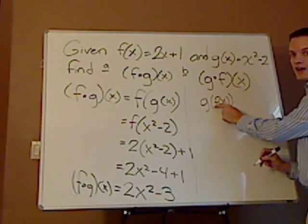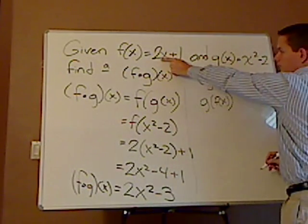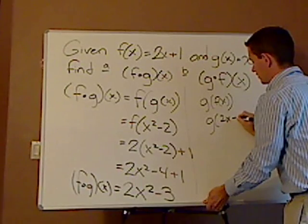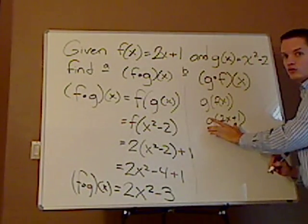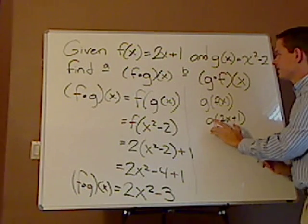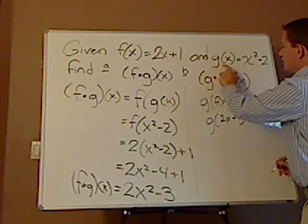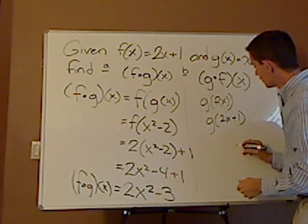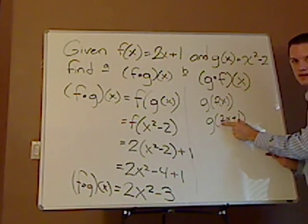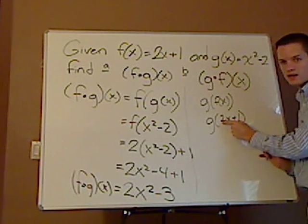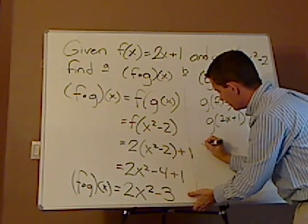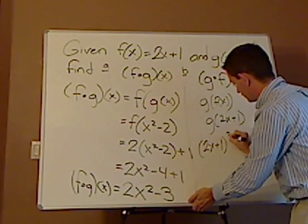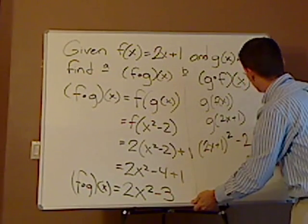So replace the f of x with your function, which is g of 2x plus 1. Now g, remember this is not a variable, this is a function. So your g of x is x squared minus 2. So wherever I see an x, I'm going to replace it with this whole thing, the 2x plus 1. So then I have 2x plus 1 squared minus 2.